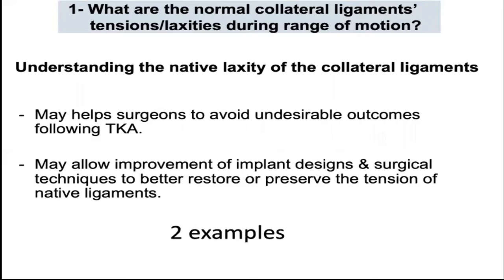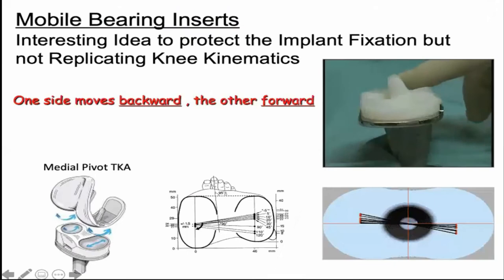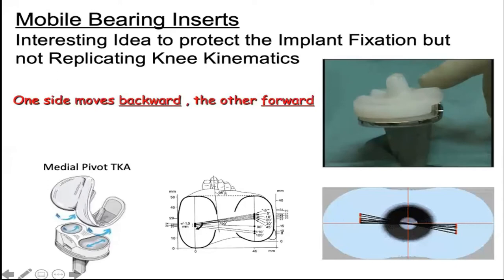By understanding the native laxity of collateral ligaments, we can avoid undesirable outcomes following total knee arthroplasty and allow improvement of implant designs and surgical techniques to better restore or preserve the tension of the native ligaments. The mobile bearing insert was an interesting idea to reduce stresses at the bone-cement interface. However, it doesn't replicate normal knee kinematics, as one side moves backward while the other moves forward.